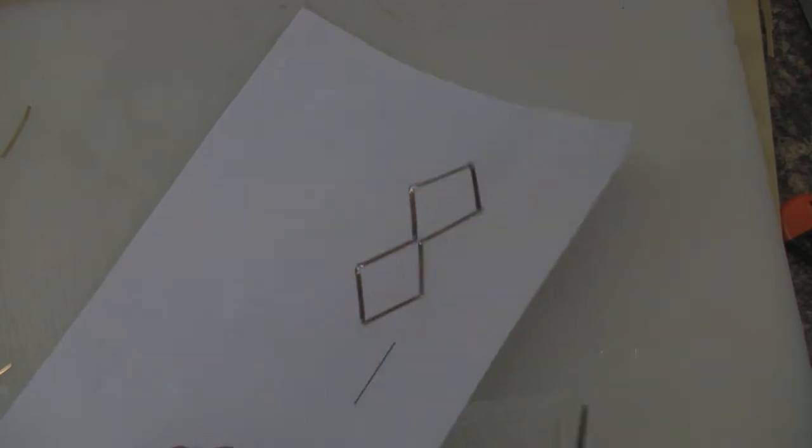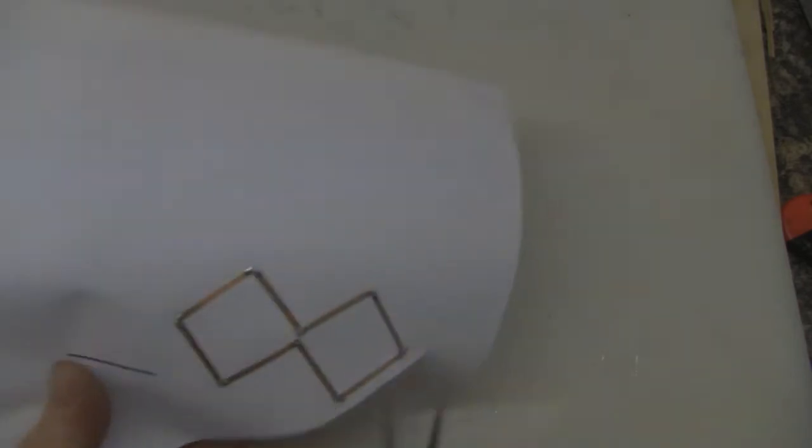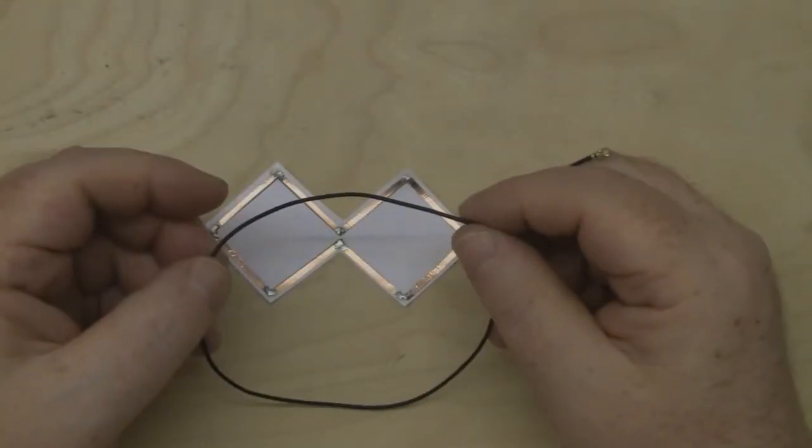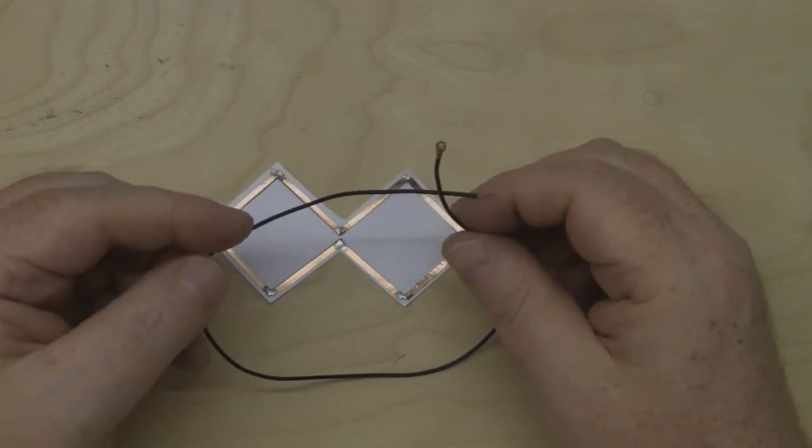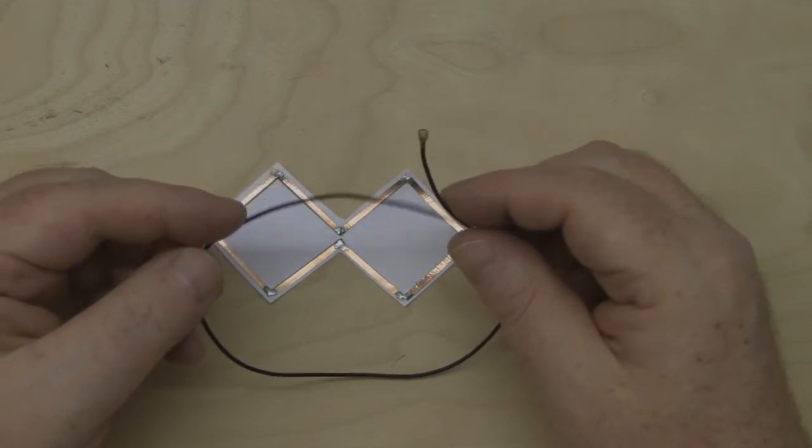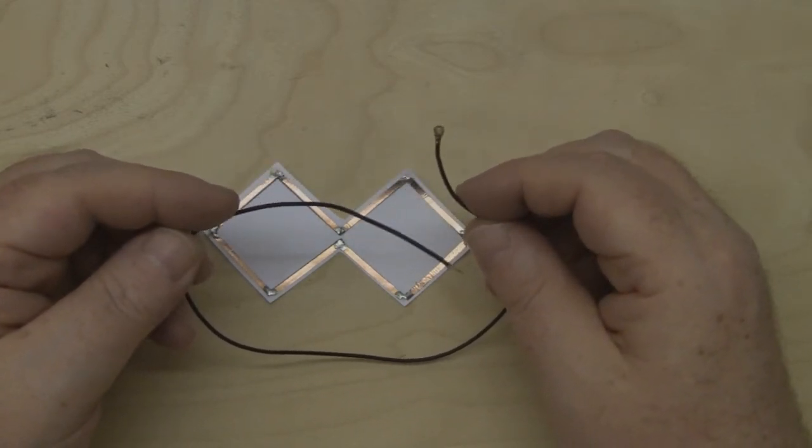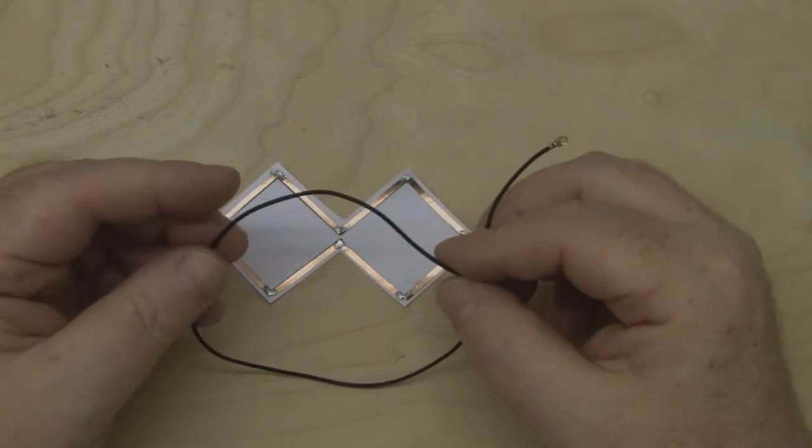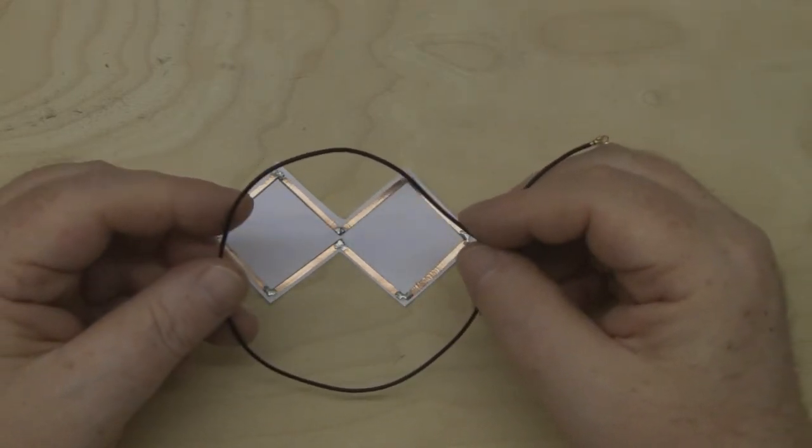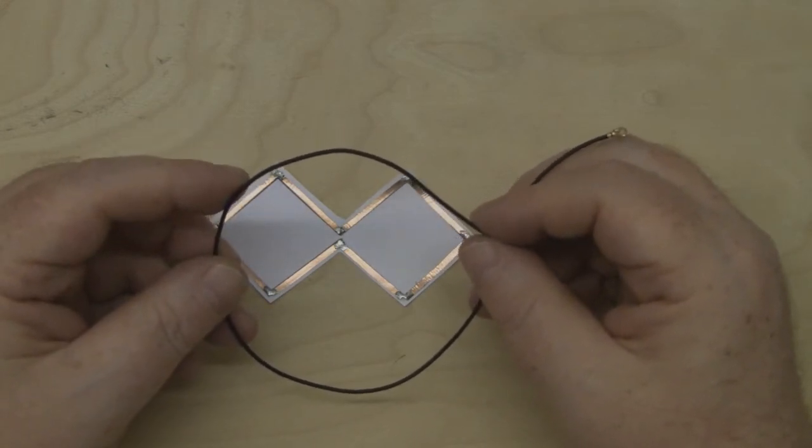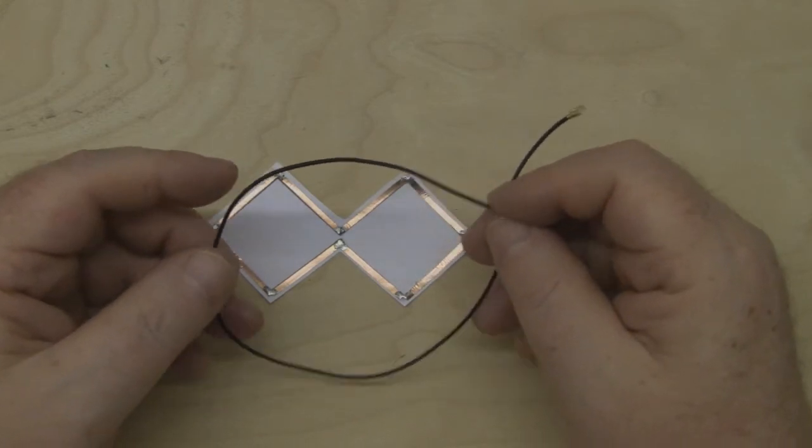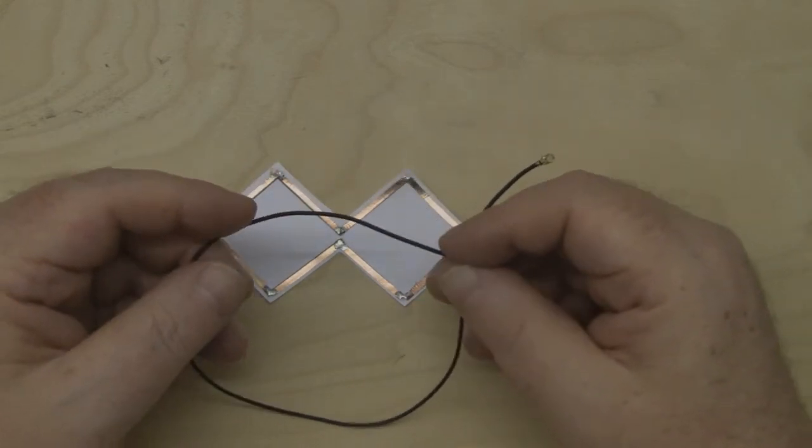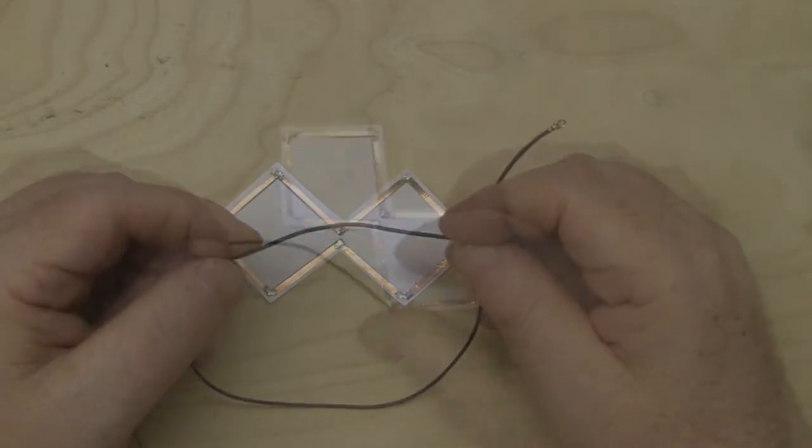Once you've got them all tinned up, put it out so it's easier to work with. The coax we're going to use is this coax that you normally find in laptops connected to the laptop antenna. This came out of a sacrificial laptop—I've saved quite a bit over the years. You can also buy this on eBay by the meter, or buy salvaged laptop antennas and cut the cable off.